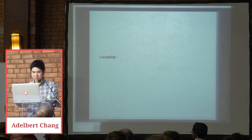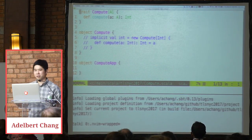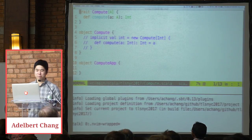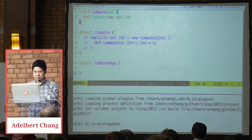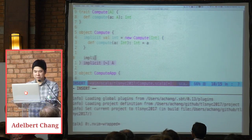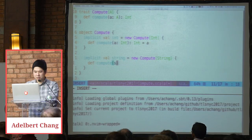I'm going to do a little bit of live coding, which always ends well. So I have this really dumb compute type class — it takes some value of type A and produces an integer. We can define an instance for int that's just the identity, and maybe define an instance for string.